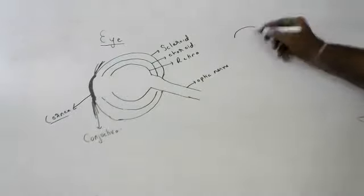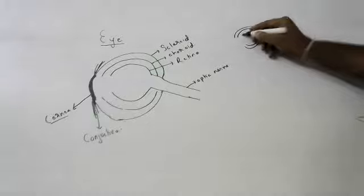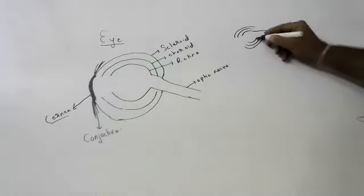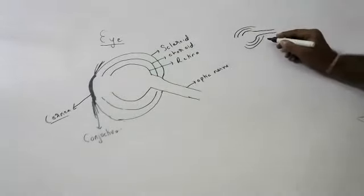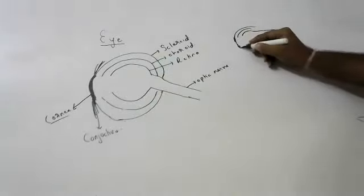So the first layer is called scleroid, second layer is called choroid, third layer is called retina. Retina at the back, and in the front it is going to form cornea. Cornea has protection, and this is how you are going to draw this.